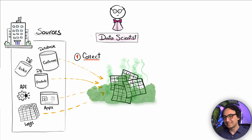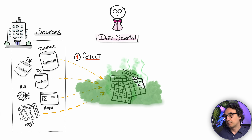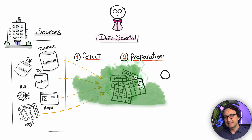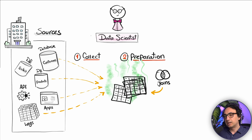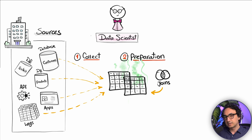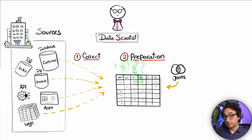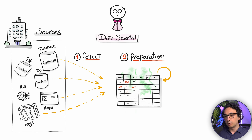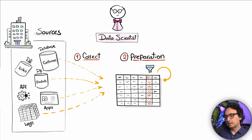All those sources speak different languages and structure their data differently — so the data is chaotic. It's time to get your hands dirty with data preparation, or pre-processing. We merge files using joins, check for nulls and replace them with something meaningful, correct data types, remove duplicates, and drop columns that are totally useless.